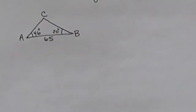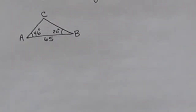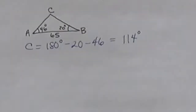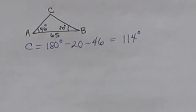Let's solve the following triangle using the law of sines. Here we're given an angle-side-angle: angle A is 46 degrees, side length C is 65, and angle B is 20 degrees. Because I have two of the angles, I can begin by finding the third angle — angle C will be 114 degrees. Now I know side length C and angle C, so I have a full side of a proportion and can use the law of sines to find the other side lengths.